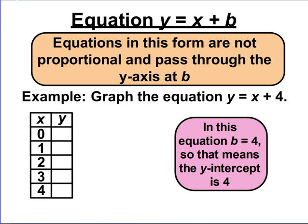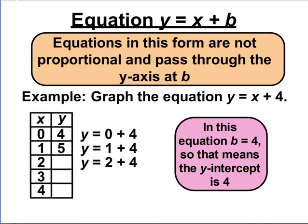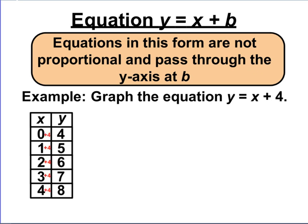Let's get our x-y table and find our values. I'm going to substitute in 0 through 4 for x and calculate the y values. When x is 0, y is 4. When x is 1, y is 5. When x is 2, y is 6. When x is 3, y is 7. And when x is 4, y is 8. These values are not proportional — the relationship between x and y is additive and not multiplicative. When the relationship is additive, you do not have proportional ratios.